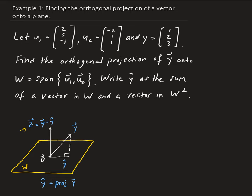Just at a glance, we can see that u1 and u2 — if we take the dot product — we get 2 times -2, which gives us -4, plus 5 times 1, which gives us 5, plus -1 times 1. So that gives us 0. So u1 and u2 form an orthogonal basis for W — these two vectors are independent of each other.